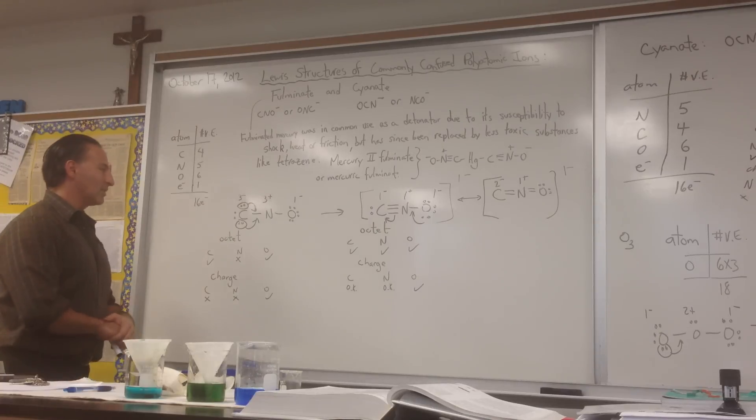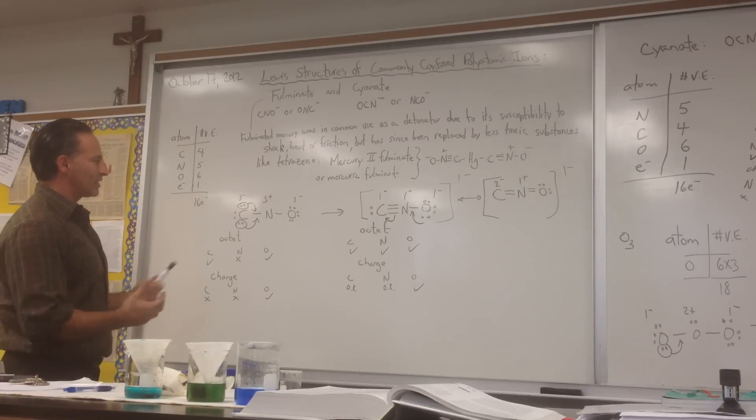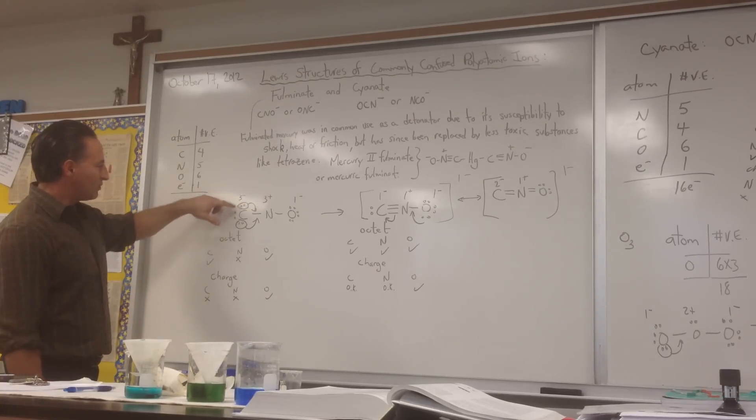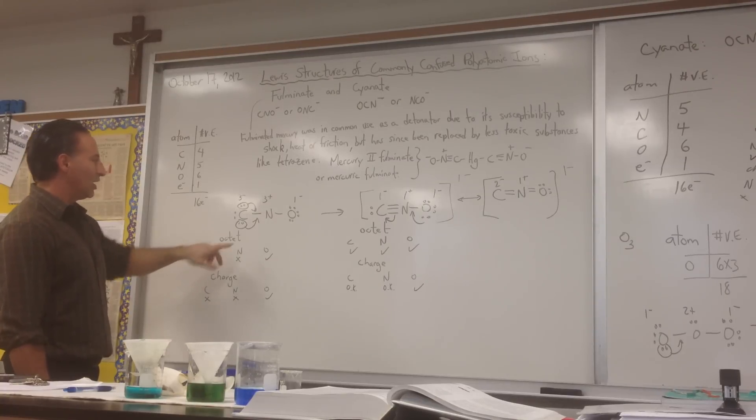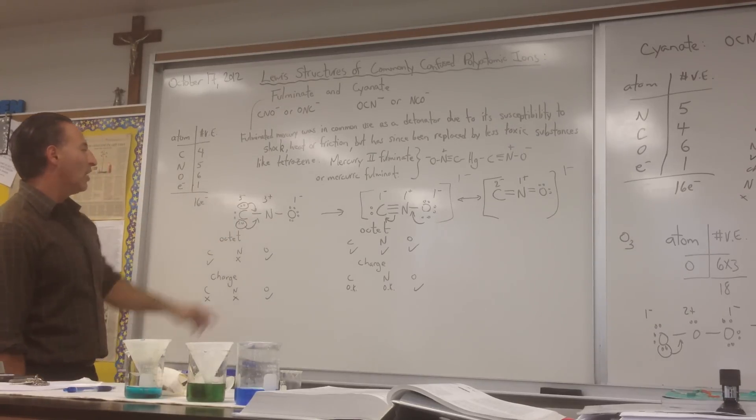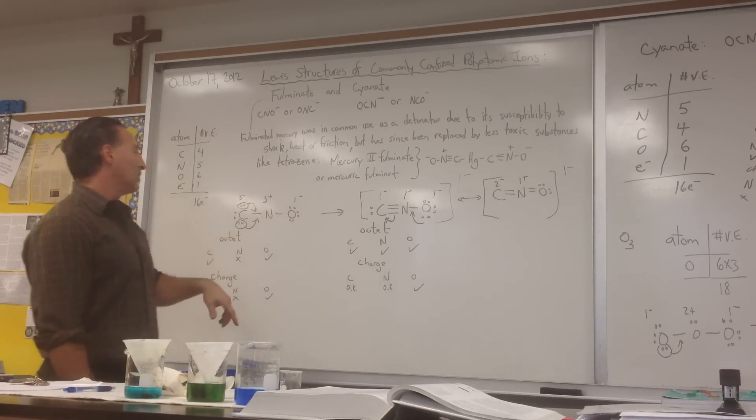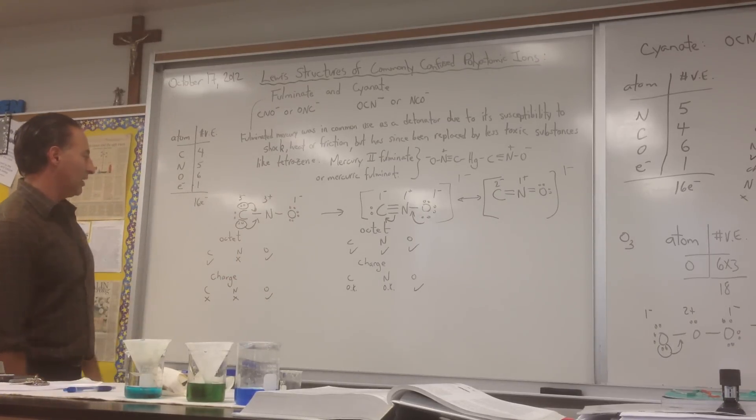Now, let's do an accounting of the octets. Each atom likes to have 8 electrons in its vicinity. Carbon has 2, 4, 6, 8, so its octet is fulfilled. Nitrogen only has 4 in this configuration, so its octet is not fulfilled. And for oxygen, 2, 4, 6, 8, it has a completed octet.